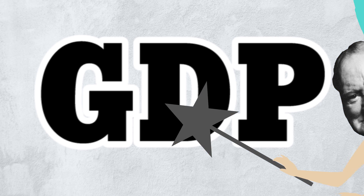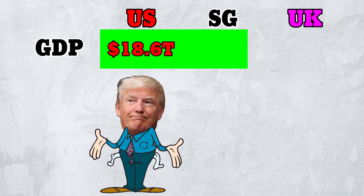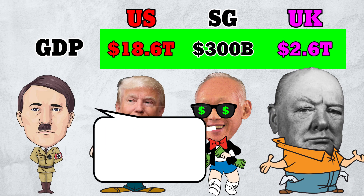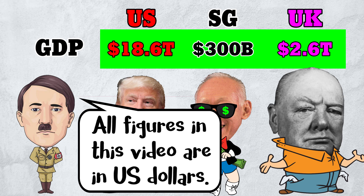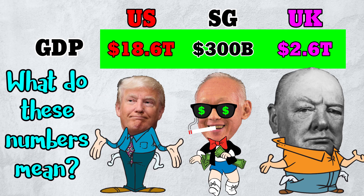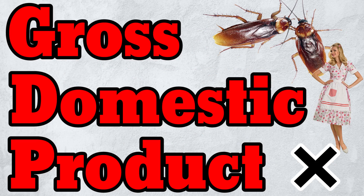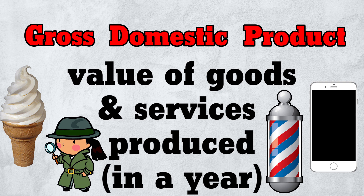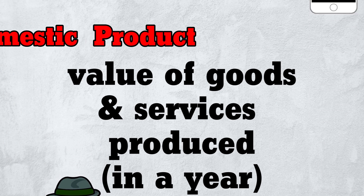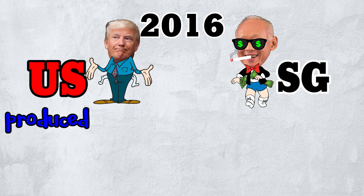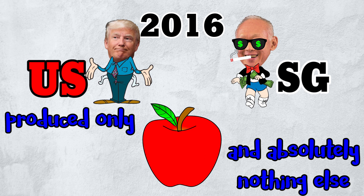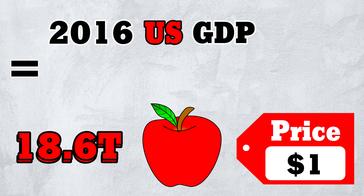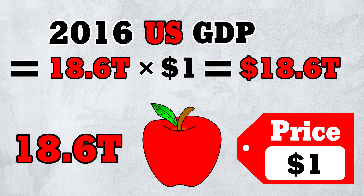Step 1. The 2016 GDPs of the US, Singapore and the UK were about 18.6 trillion, 300 billion and 2.6 trillion US dollars. GDP stands for Gross Domestic Product — the sale value of all goods and services produced in an economy in a given time period, usually a year. For example, imagine that in 2016 the US produced only apples: 18.6 trillion apples each sold for $1, so 2016 US GDP was 18.6 trillion times $1, or 18.6 trillion dollars.